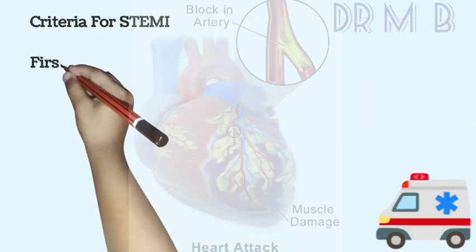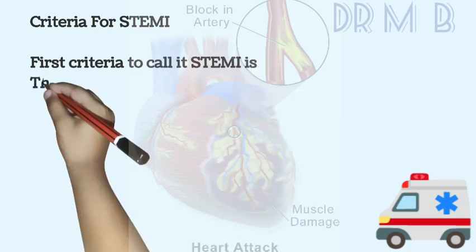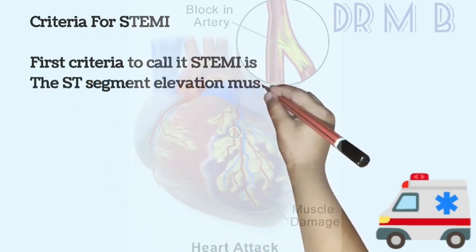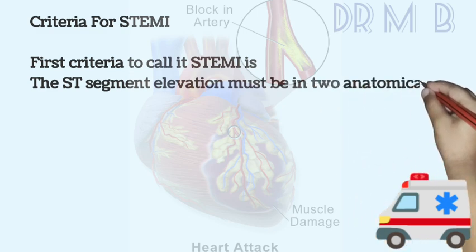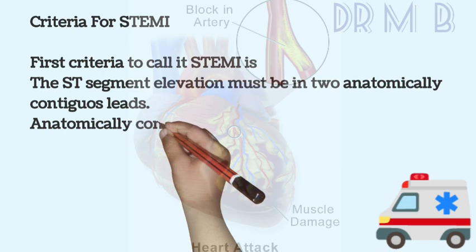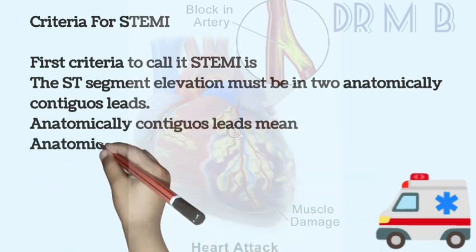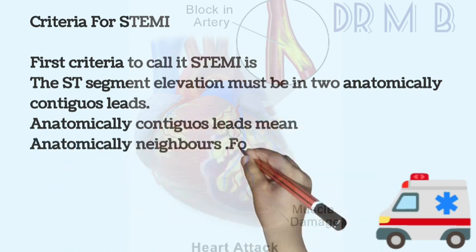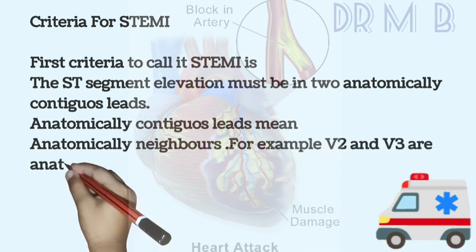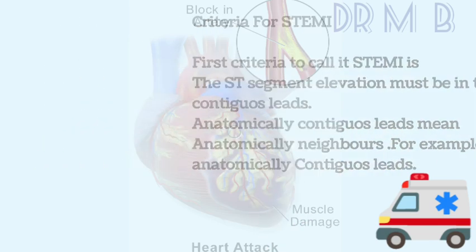So the criteria for ST elevation MI: the first criterion is that the ST segment elevation must be in two anatomically contiguous leads. Anatomically contiguous leads mean anatomically neighboring leads — for example, V2 and V3 are anatomically contiguous leads.